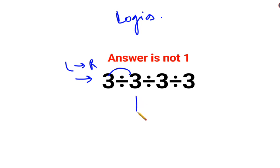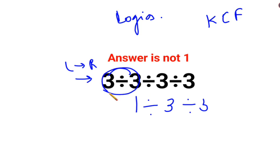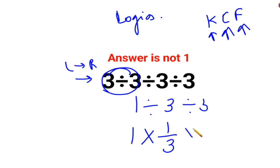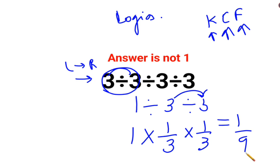So 3 divided by 3 is 1, divided by 3, divided by 3. Now when you have division and it is not directly getting cancelled, you can follow the rule of KCF — where K stands for keeping the first number as it is, C stands for changing the division sign to multiplication, and F stands for flipping or taking the reciprocal of 3, which gives 1 upon 3, multiplied by 1 upon 3. The same thing applies here as well, so the answer for this question is 1 upon 9.